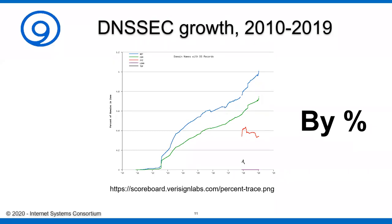The problem is that when you look at it by percentage, .net is actually ahead of .com, and we're still only at 1% there and at less than 0.8% within .com. So we're moving in the right direction, but it still needs a lot of push.